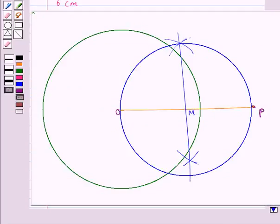So, we have drawn a circle taking M as center and it intersects the given circle at the point Q and R. So, let this point be R and let this point be Q.